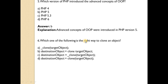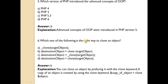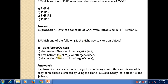Which one of the following is the right way to clone an object? Answer is B. You can clone an object by prefacing it with the clone keyword. A copy of an object is created using the clone keyword.